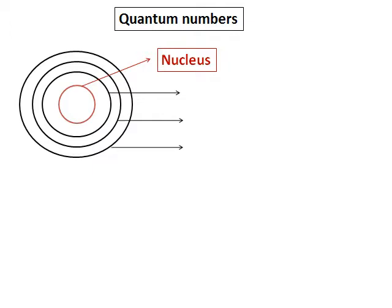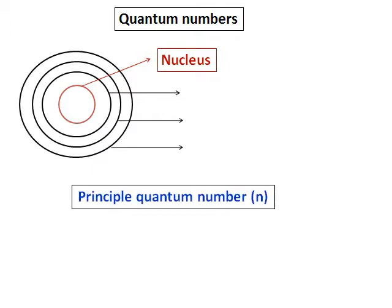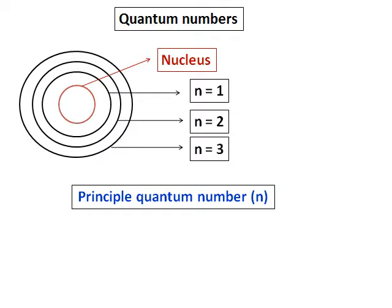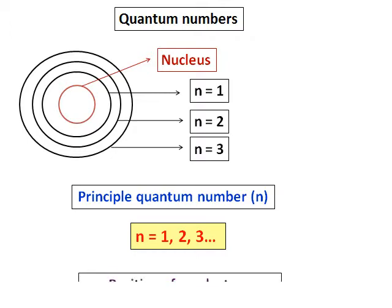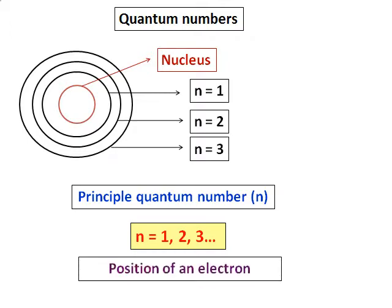Instead of just calling them orbitals, let us give them an identity and a name — and we call it by the first quantum number, the principal quantum number. We can call the first level as n = 1, the second as n = 2, and the third one as n = 3. This principal quantum number takes the values 1, 2, 3 and gives me the position of an electron.